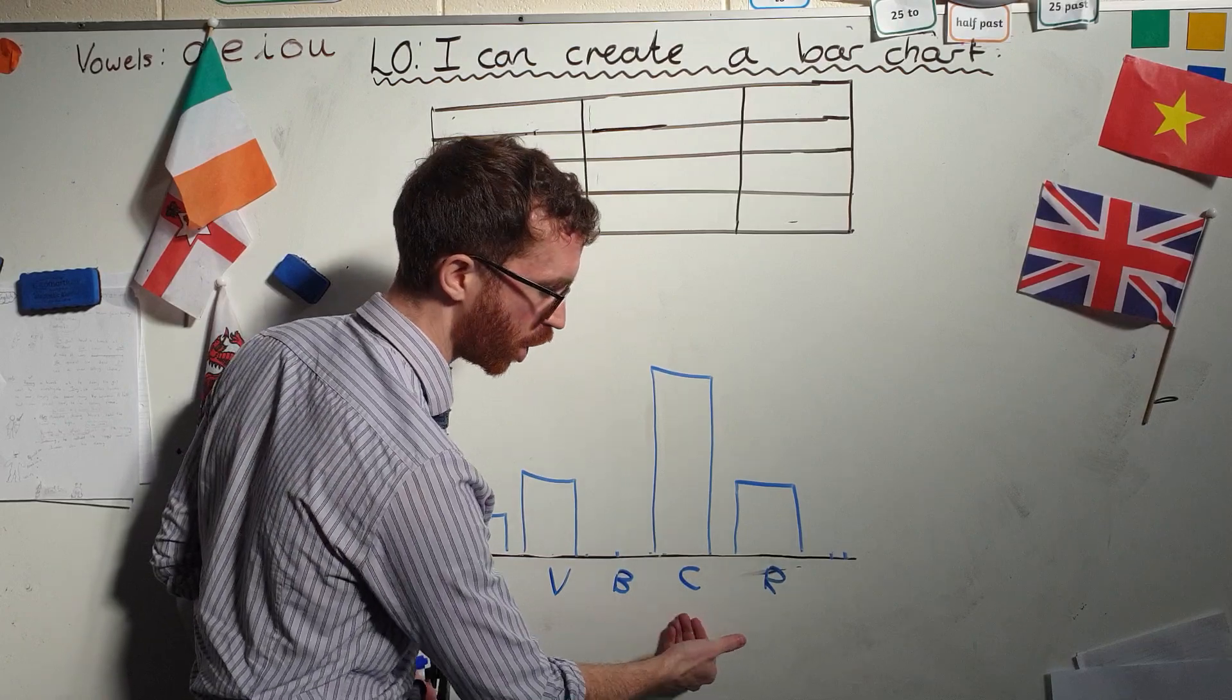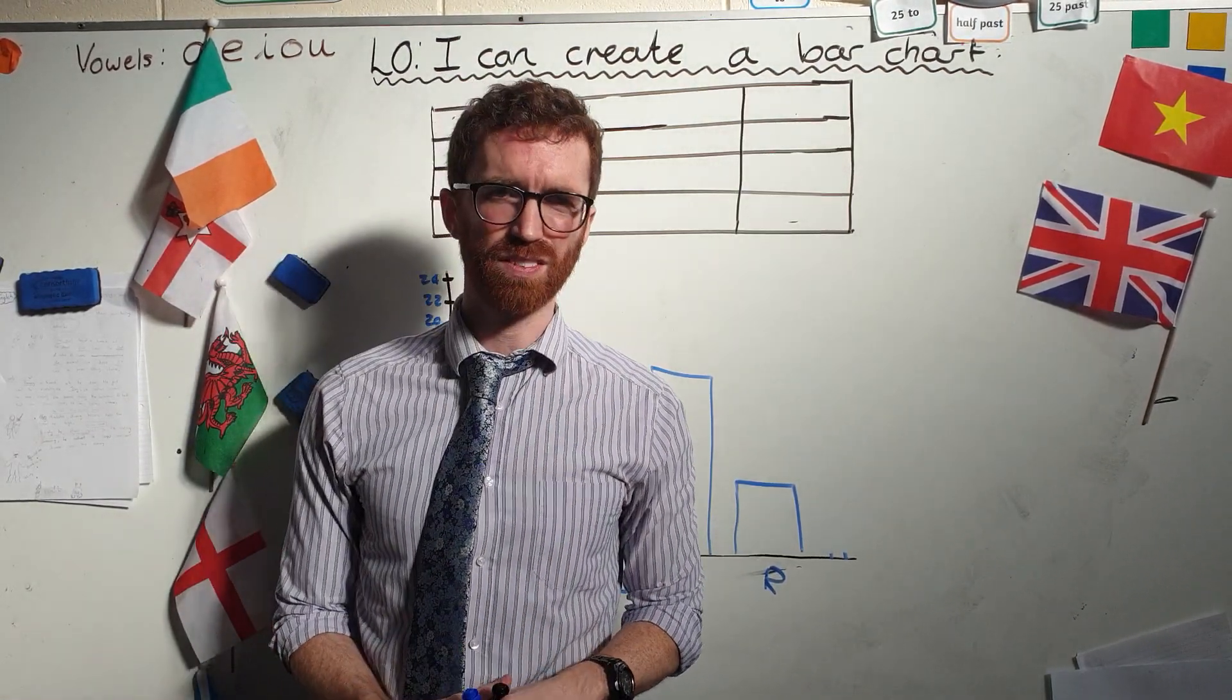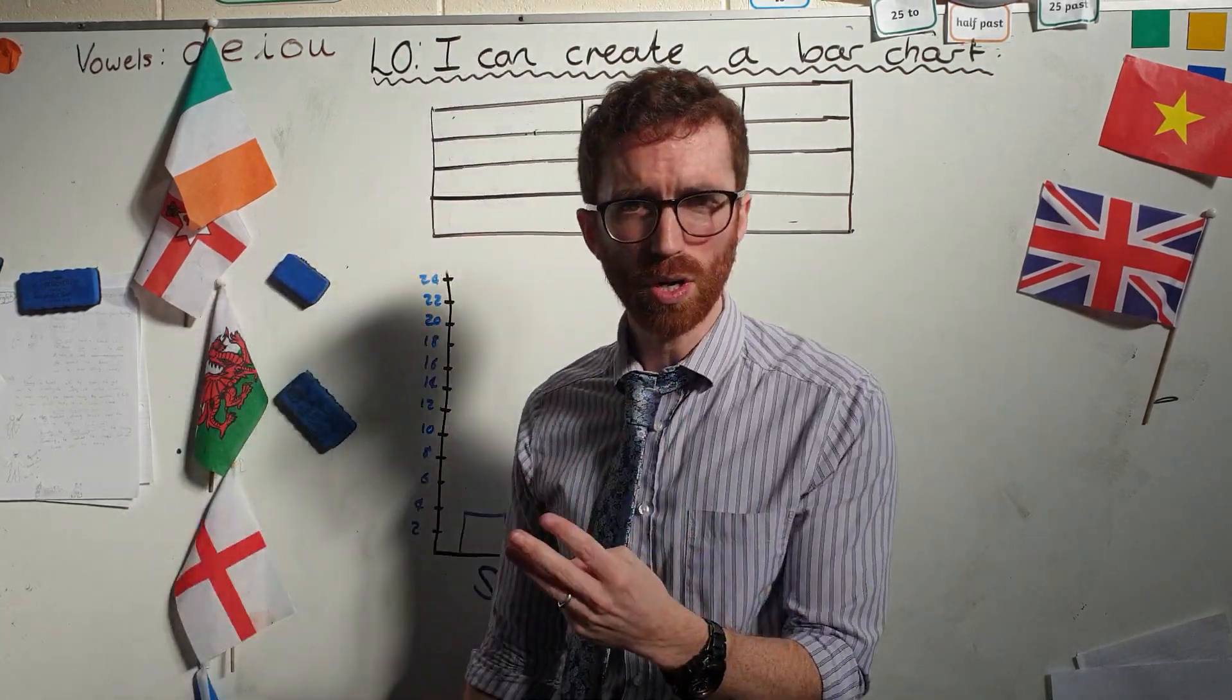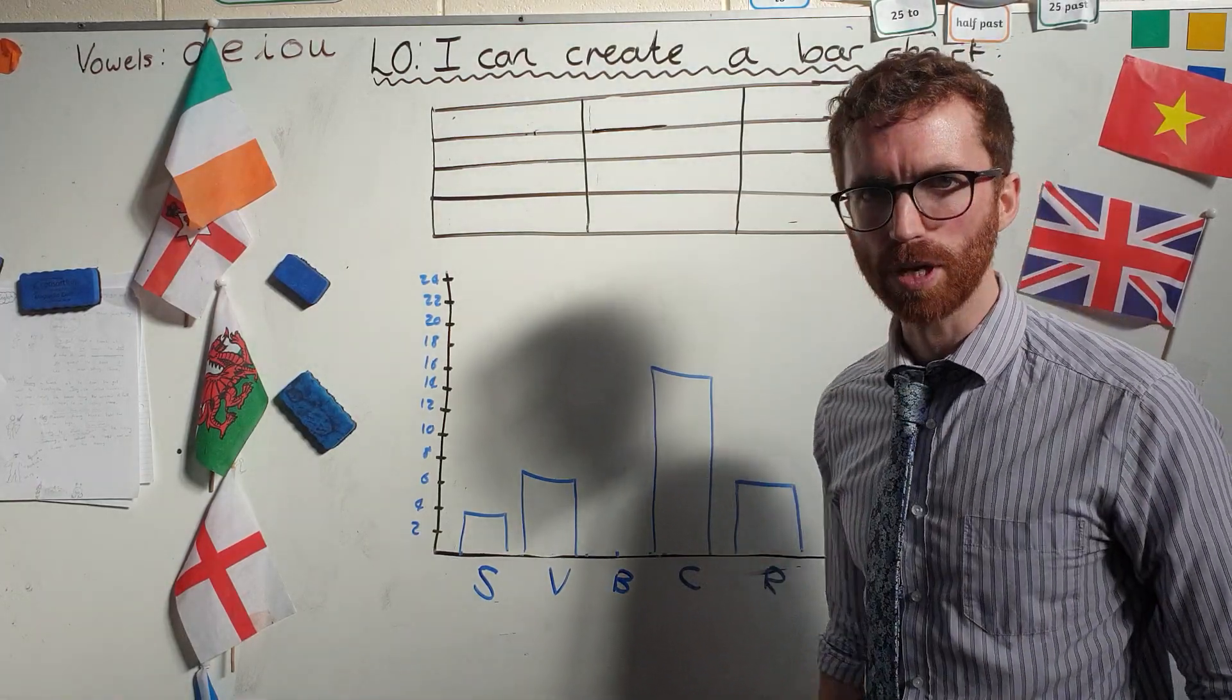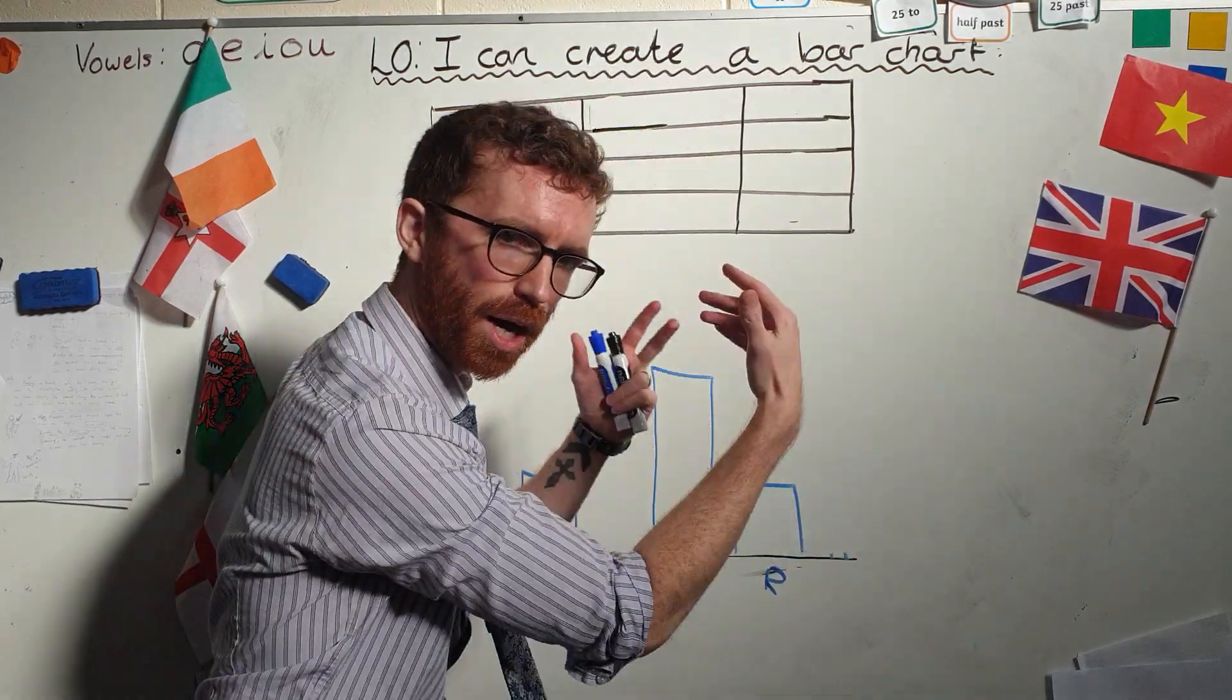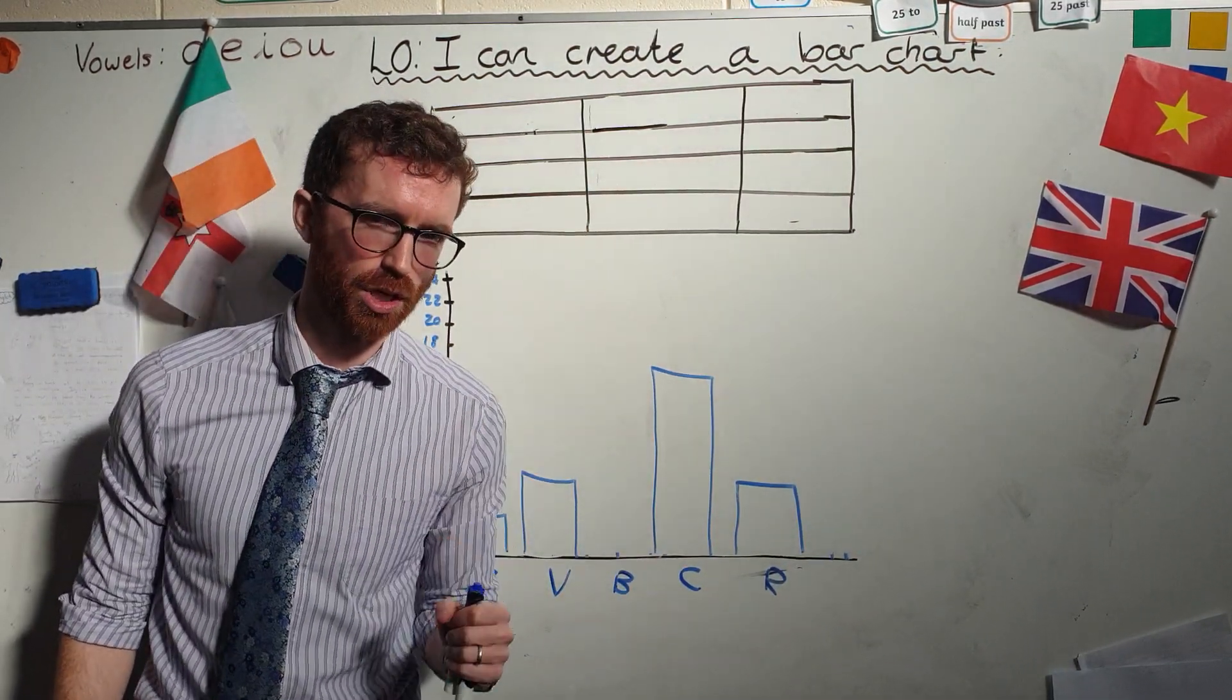This is how well different ice creams are selling in my shop. I've got strawberry, vanilla, banana, chocolate, and raspberry ice creams. Now I've got to make a decision. I'm running this business and I can't afford to keep all the ice creams. I can only afford to have three ice creams in my shop. Now I could look at all the numbers and start to get a little bit confused, but if I put the information into a bar chart as I've done here, it becomes really obvious which ice creams I should keep.